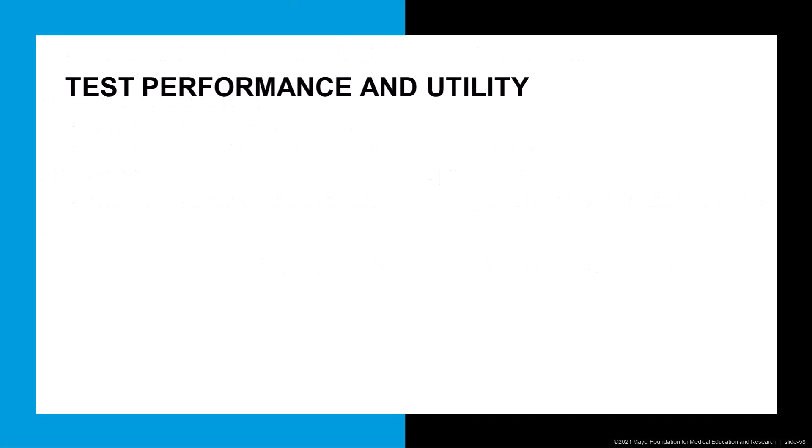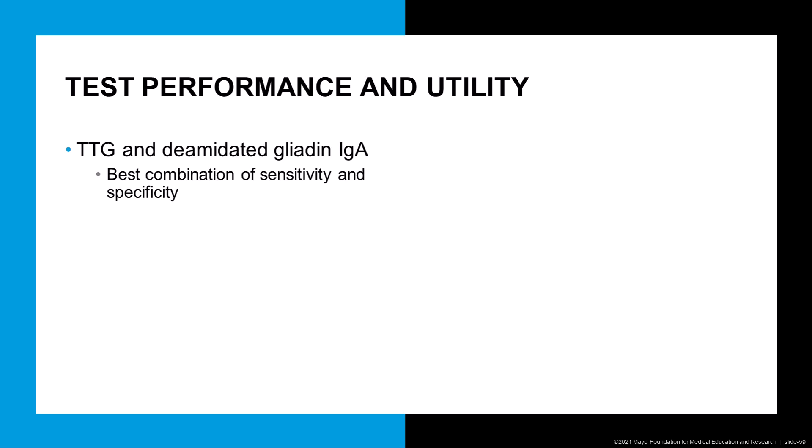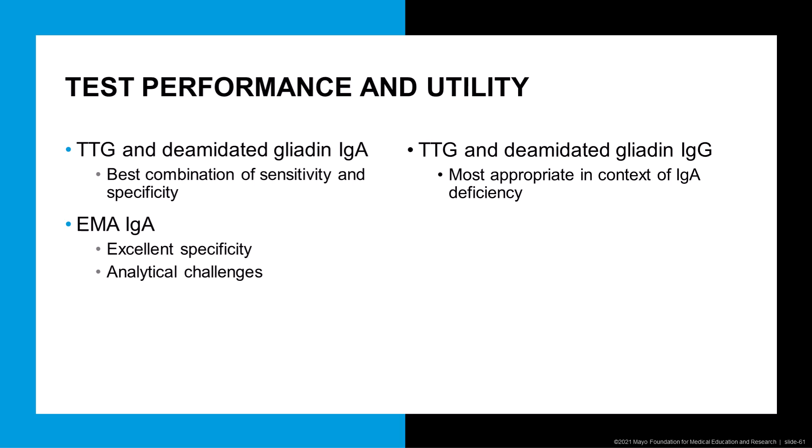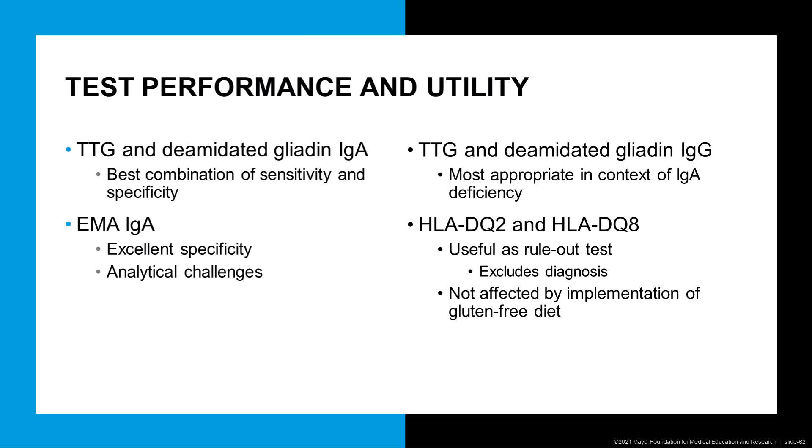The IgA isotypes for TTG and deamidated gliadin consistently have shown the best combination of sensitivity and specificity. EMA-IgA generally demonstrates excellent specificity; however, because EMA is performed by indirect immunofluorescence, this testing can have some analytical challenges for the laboratory. The IgG isotypes for TTG and deamidated gliadin are most appropriate for patients with selective IgA deficiency. And lastly, HLA-DQ2 and DQ8 are most useful as a rule-out test to exclude celiac disease as a diagnosis, and are the only laboratory tests not affected by removal of gluten from a patient's diet.